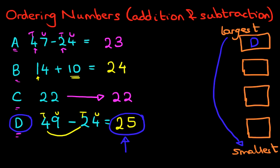OK, we've now got three left. 23, 24, 22. Which number is the largest now? It is 24. And that is B. Let's write that down. B.